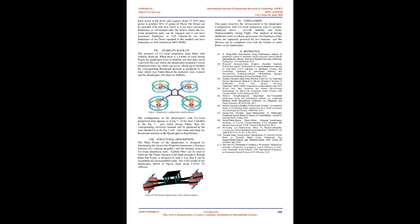Structural description: The main frame is designed by determining factors like propeller dimensions, clearance between two rotating propellers, and the distance between coaxial propulsion units. Carbon fiber is used to fabricate the frame due to its high strength-to-weight ratio, and it is designed for easy assembly and disassembly. The CAD model is made using Catia V5 software. Conclusion: This paper describes the advancement in the quadcopter configuration with coaxial propulsion units to produce additional thrust, provide stability, and enable better maneuverability during flight. Having additional rotors as a backup increases endurance when rotors are separately powered by two batteries, and the mission can be completed even with the failure of some rotors.